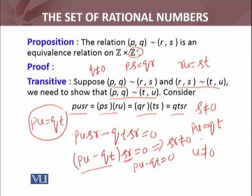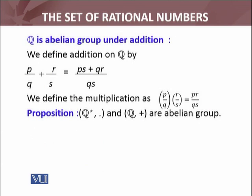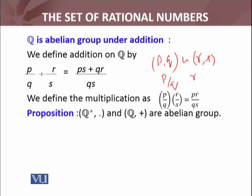From this equation we conclude that PU = QT, which was our objective. This establishes the transitive property, and therefore the relation is an equivalence relation on the Cartesian product Z×Z*. In fact, this equivalence relation is what defines the set of rational numbers: (P,Q) related to (R,S) means that the fraction P/Q equals R/S. Now, to show Q is an abelian group under addition and multiplication, we need to define P/Q as the set of rational numbers where P,Q belong to Z and Q ≠ 0.